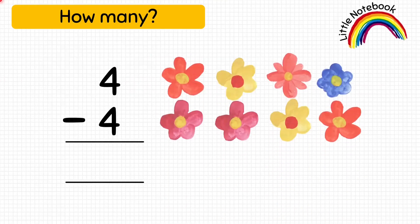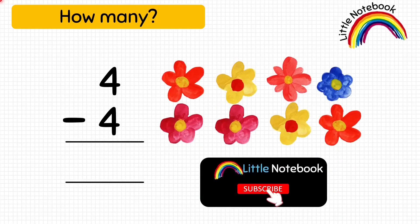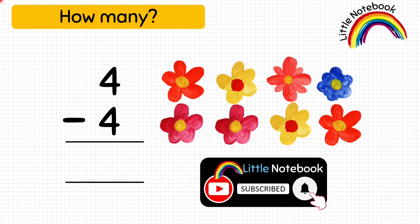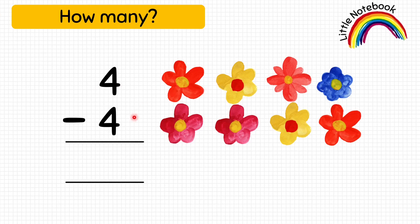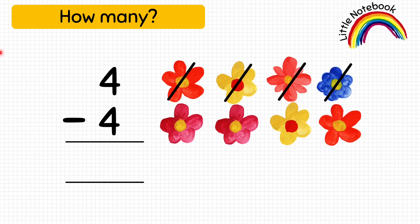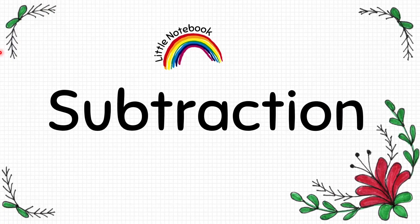Next question: four minus four equals how much? The first four represents these four flowers and the second four represents these four flowers. To subtract, let's cross out four flowers — one, two, three, four. We are not left with any flower, so we are left with zero flowers. Four minus four equals zero.